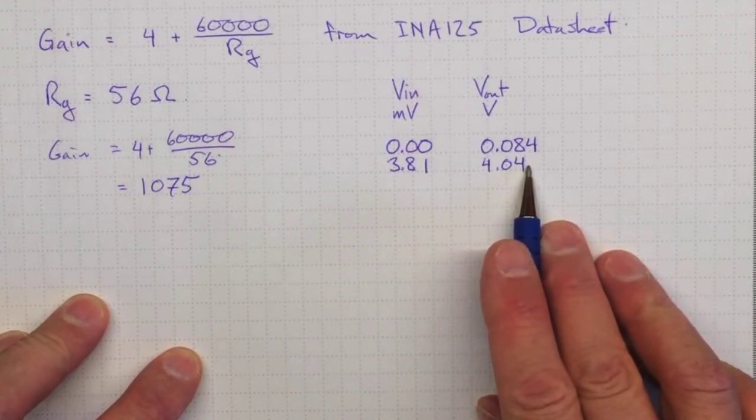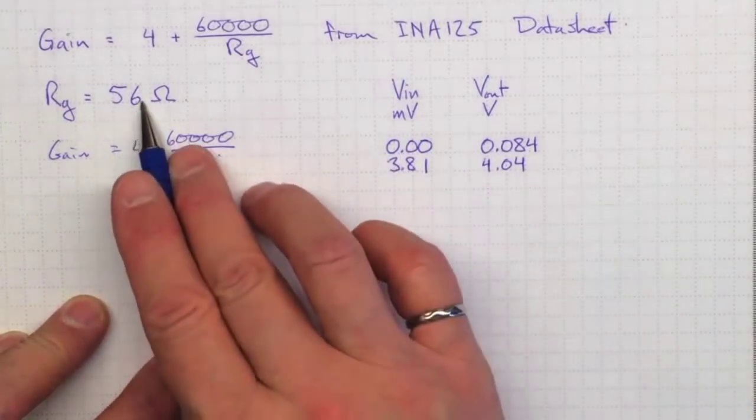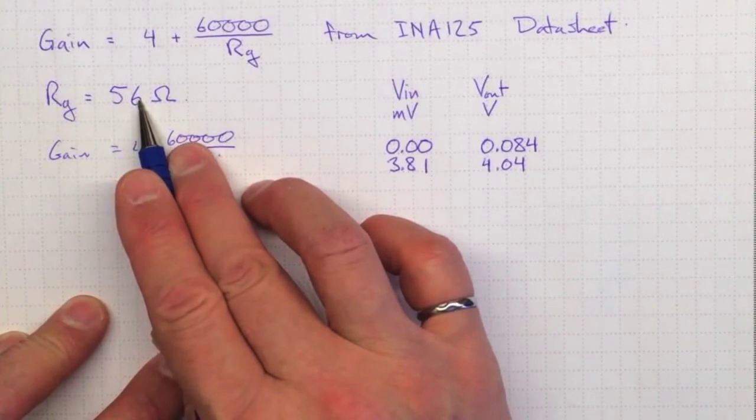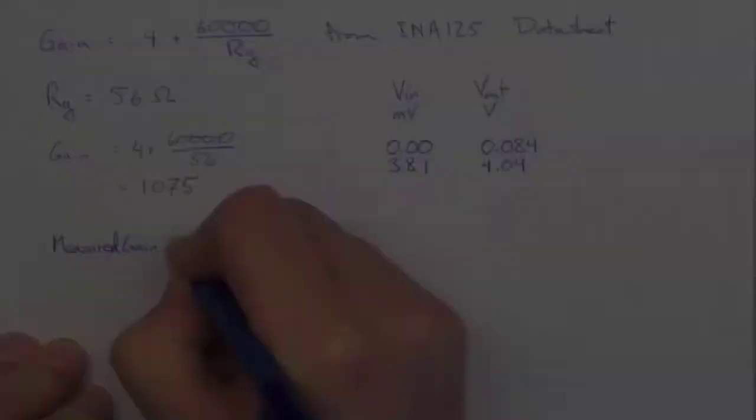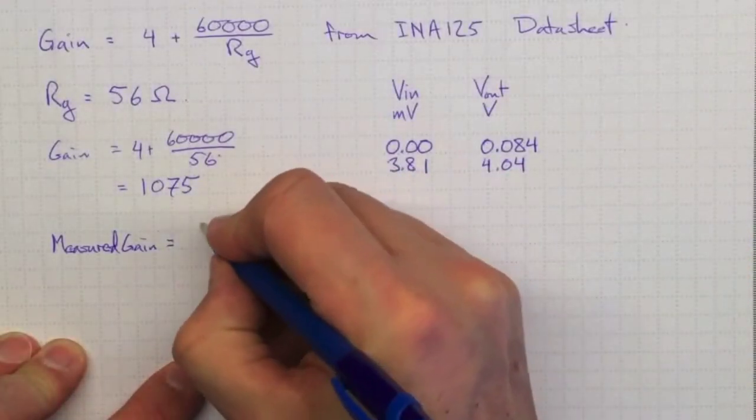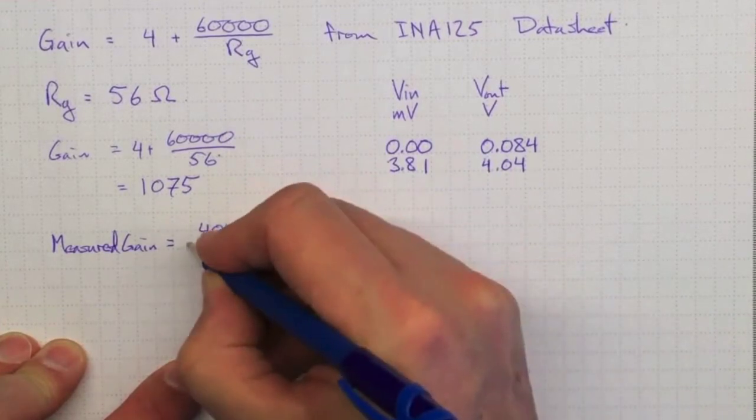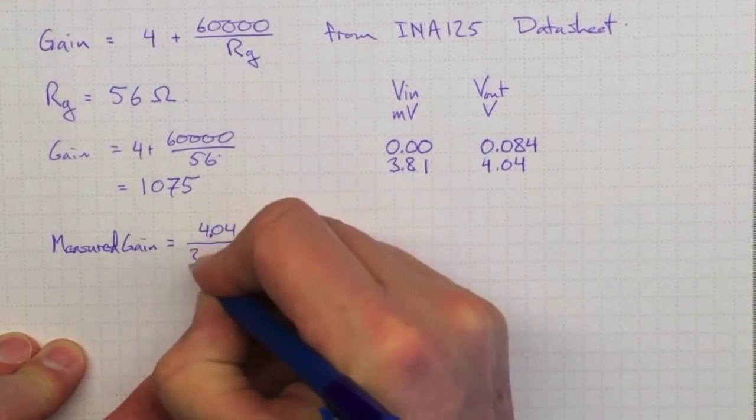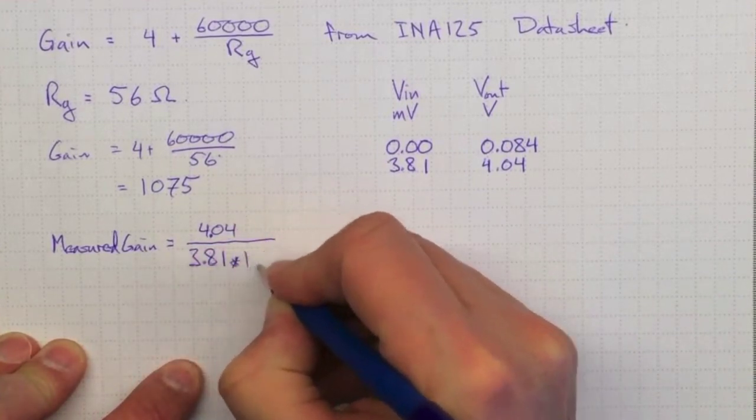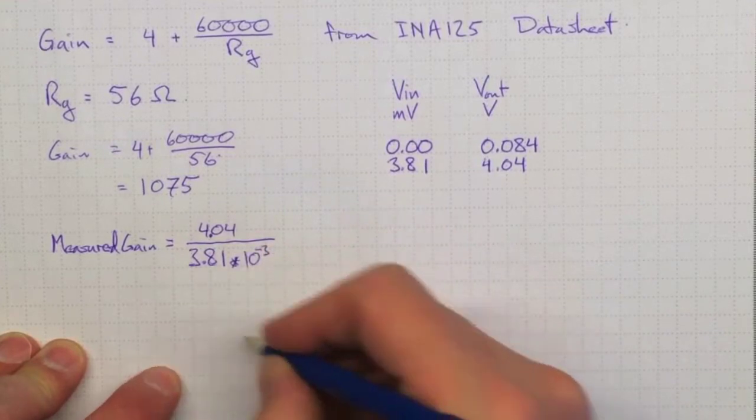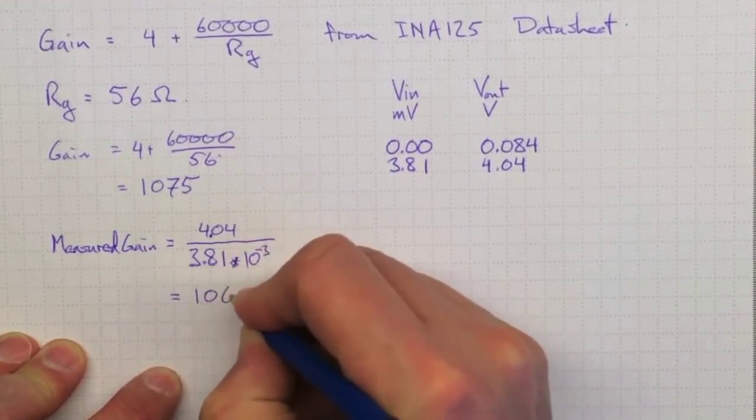But if we do the calculation for this gain, we can get a better answer than just taking the markings on the resistor at face value. So we can also get a measured gain equal to the output voltage, 4.04 volts, divided by the input voltage, 3.81 millivolts, or 3.81 times 10 to the minus 3 volts. And that number is 1,060.